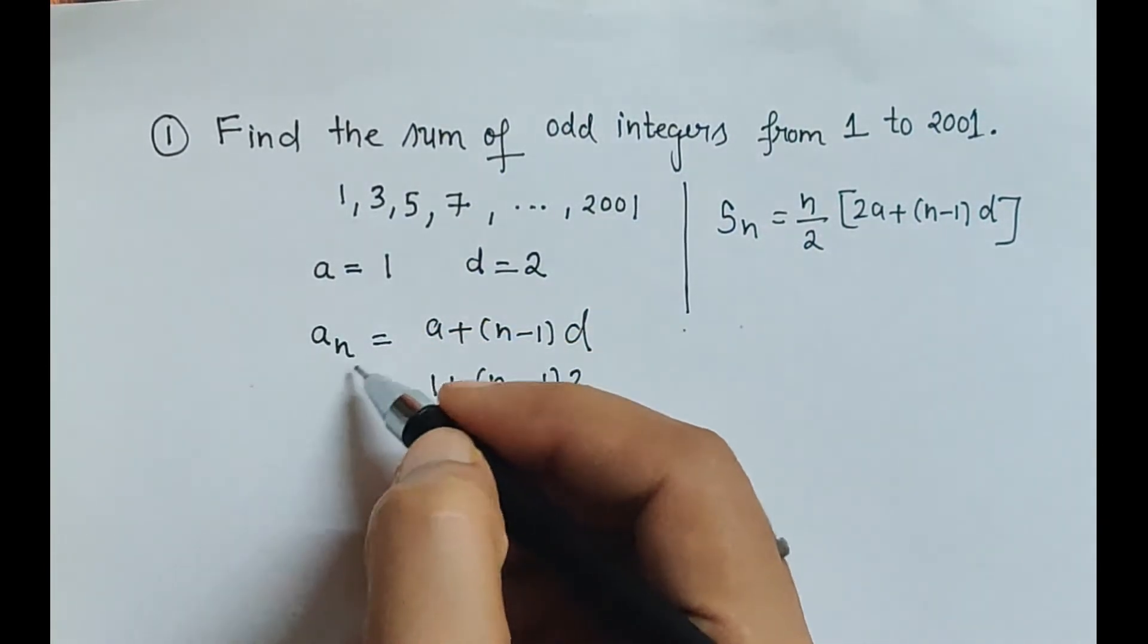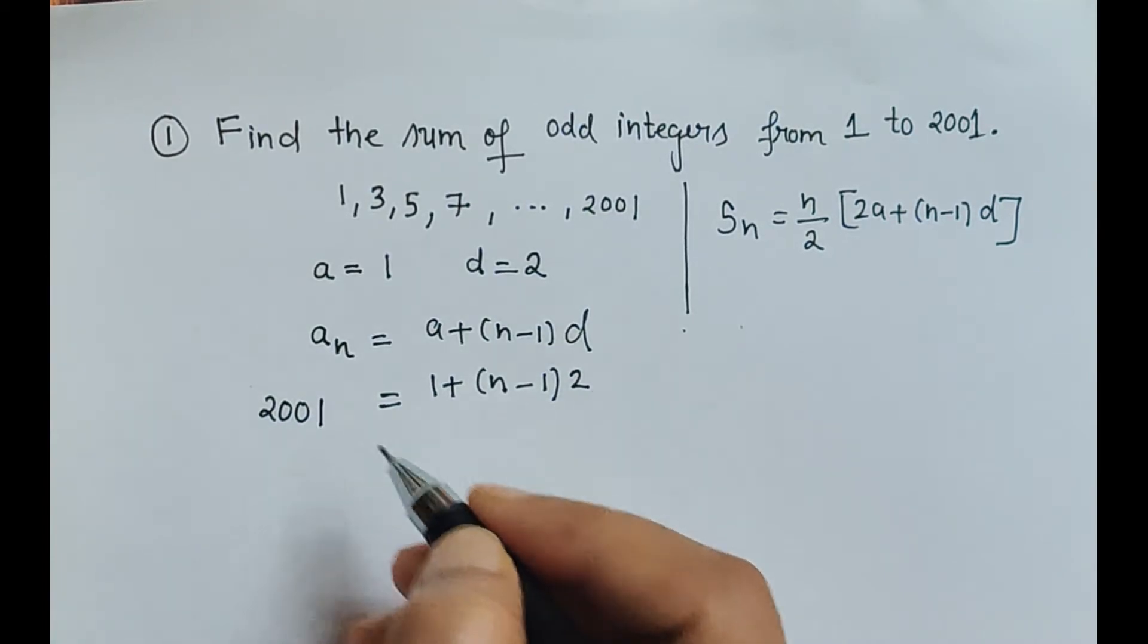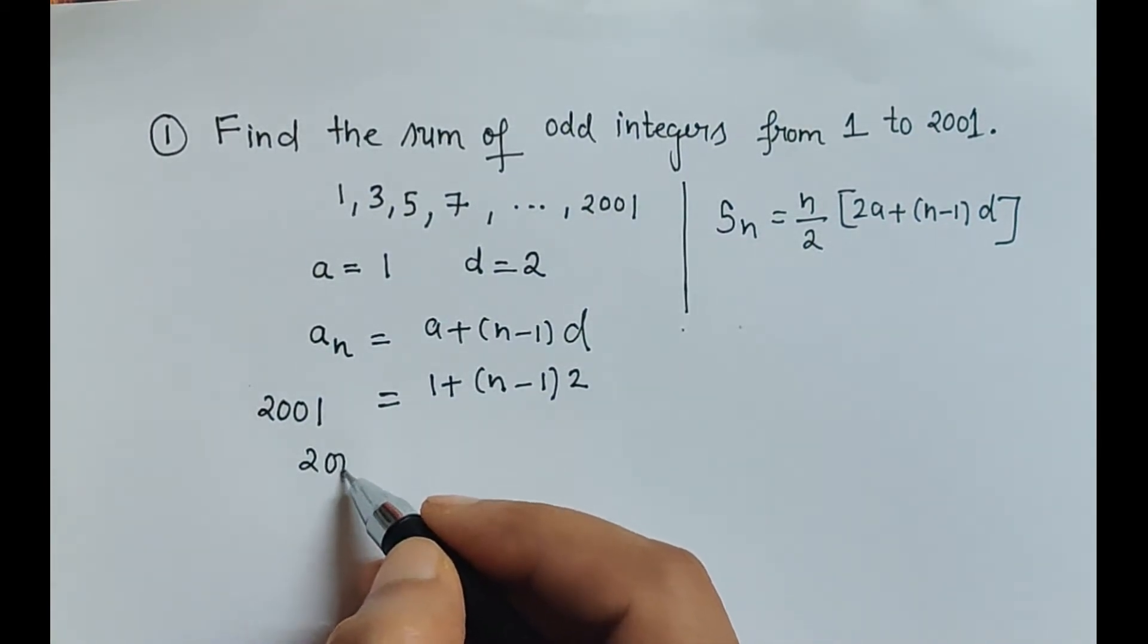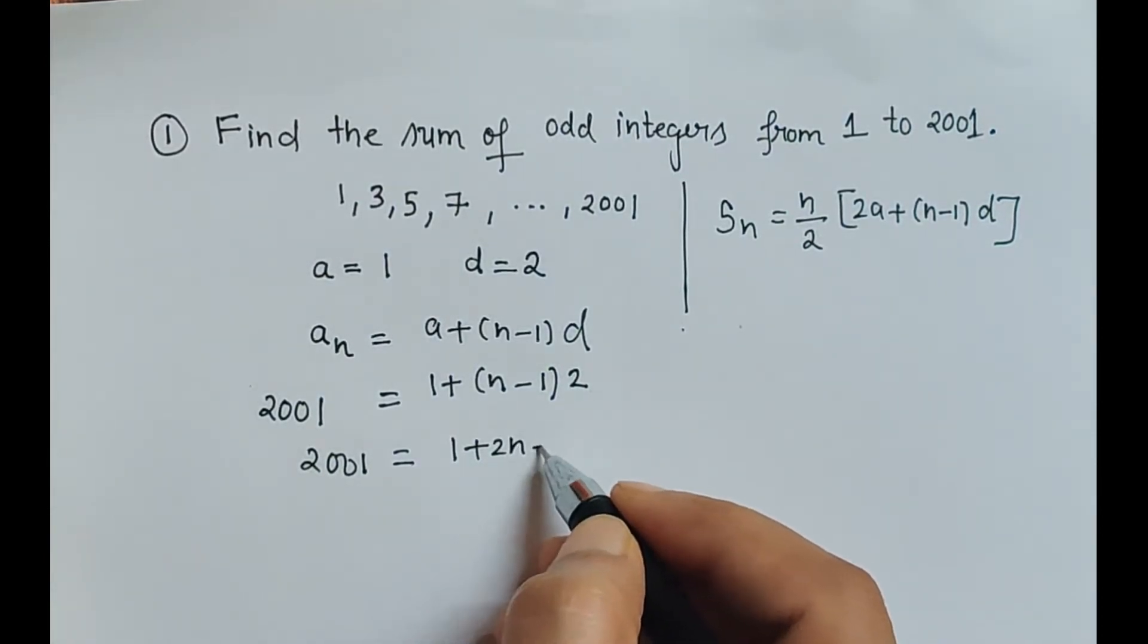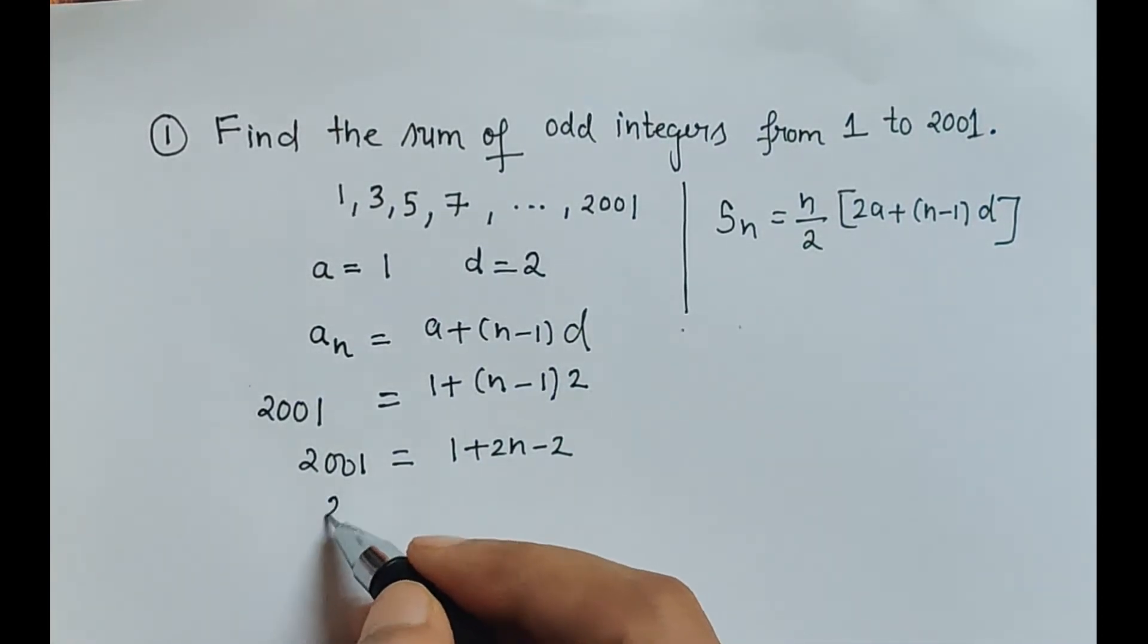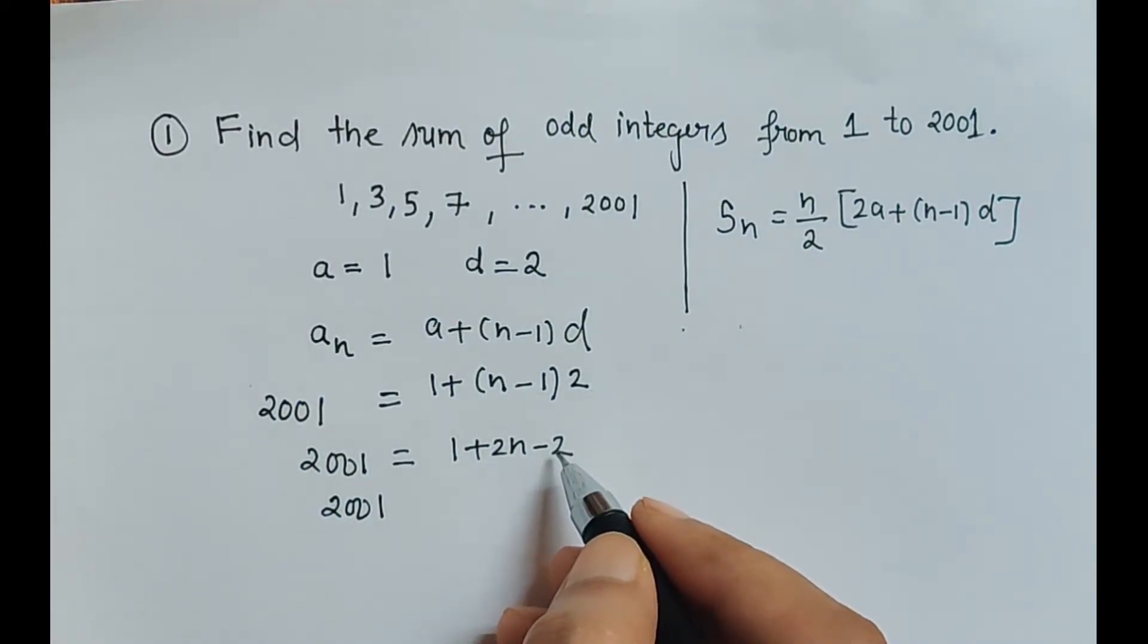So in the place of an is the value of the last term. So here we will replace an by 2001. Now simplification: 2001 is equal to 1 plus 2n minus 2.